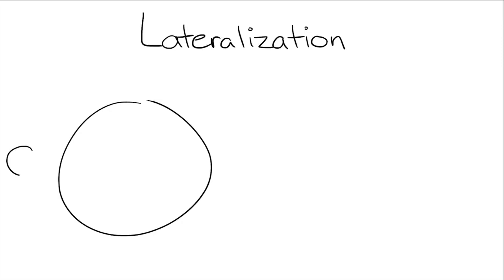Why do we have a dominant side? Lateralization. This refers to some brain functions taking place in one hemisphere, or one side, rather than the other.